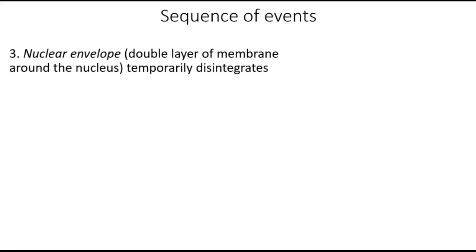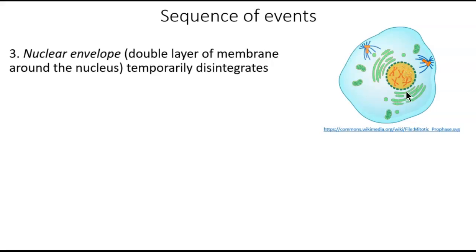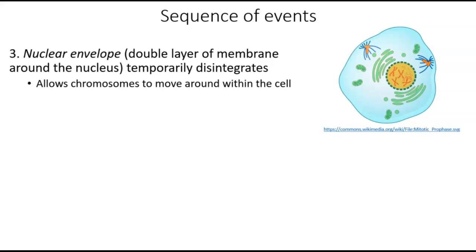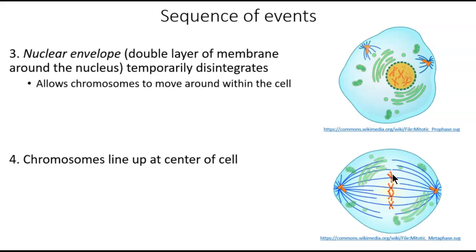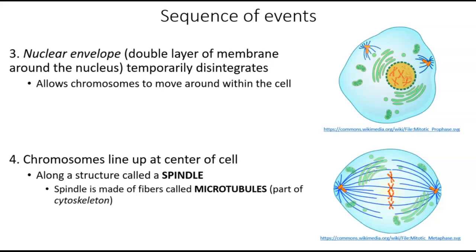Once the chromosomes are condensed, they're ready to move, but they're still trapped inside the nucleus. So the next thing that happens is the nuclear envelope, that double layer of membrane around the nucleus, temporarily disintegrates. Enzymes break apart that membrane to allow the chromosomes to move around within the cell. Once they can do that, the chromosomes will move towards the middle of the cell and line up along the center. These replicated condensed chromosomes are lined up along the middle of the cell along a structure called a spindle. The spindle, which started forming as the nuclear envelope was disintegrating, is made of fibers called microtubules — part of the cytoskeleton. These microtubule fibers provide tracks for chromosomes to move along, similar to how vesicles moving from the ER to the Golgi need tracks to move along.